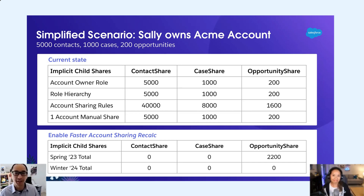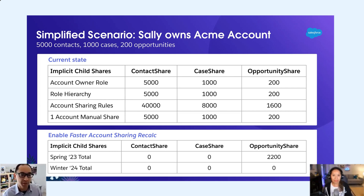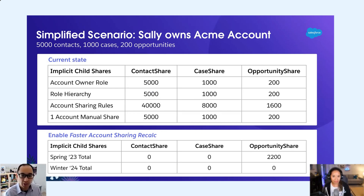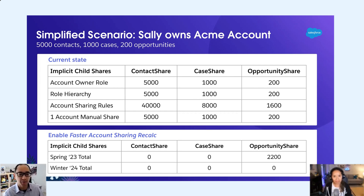Let's say Sally owns the Acme account. On the Acme account, there are 5,000 contacts, 1,000 cases, and 200 opportunities. Sally, as the account owner, her role grants her implicit child shares — so she has 5,000 contact shares, 1,000 case shares, and 200 opportunity shares, all with a row cause equal to implicit child. Similarly, we'll assume there's access granted for roles above in the role hierarchy — implicit children there too.